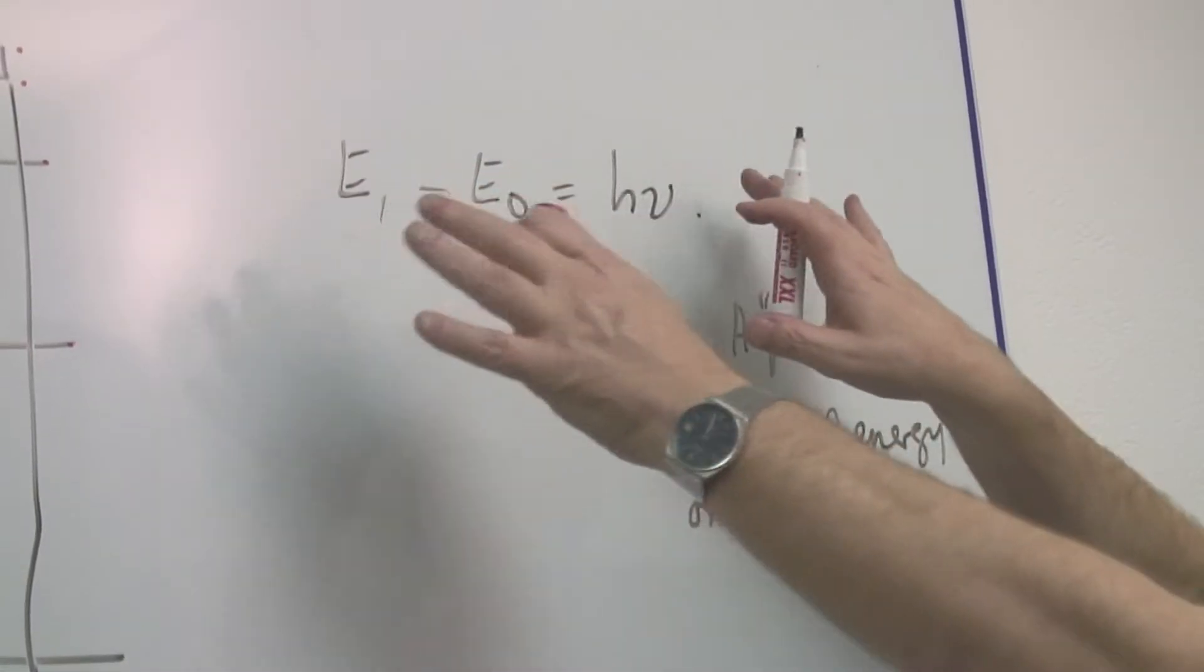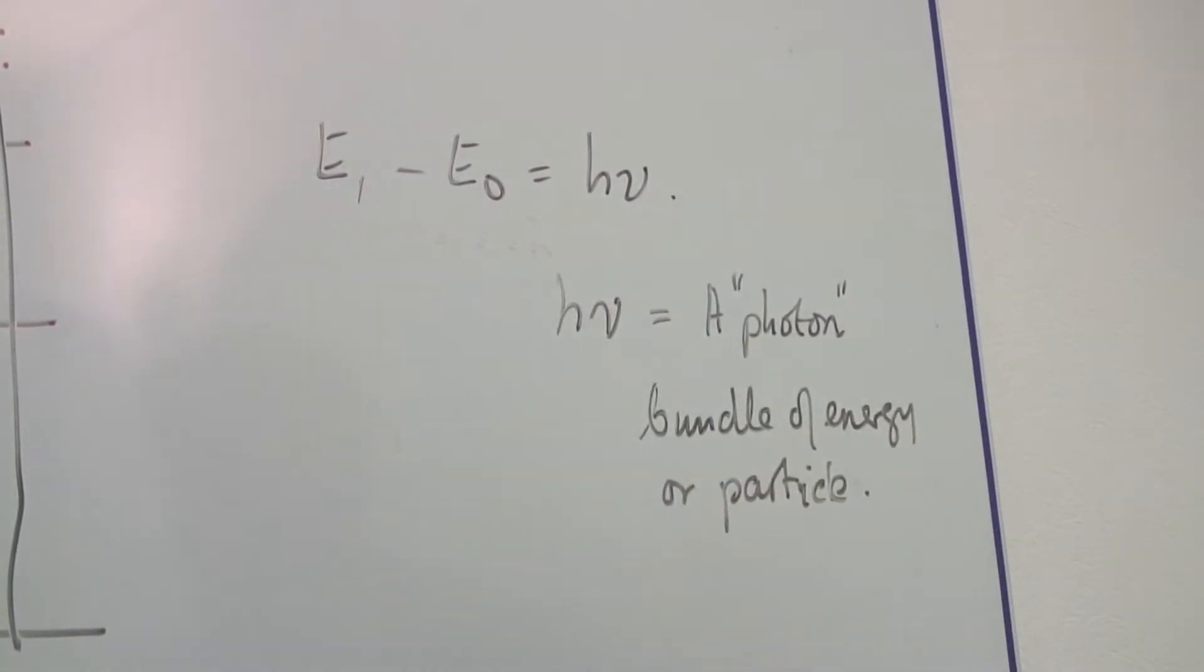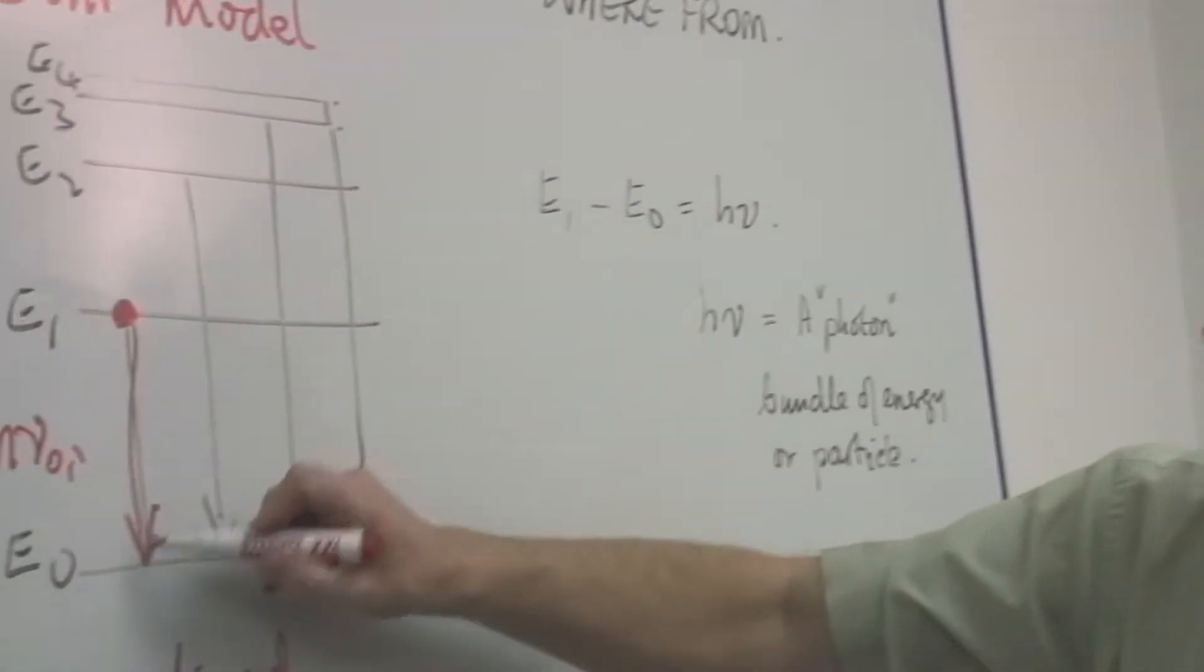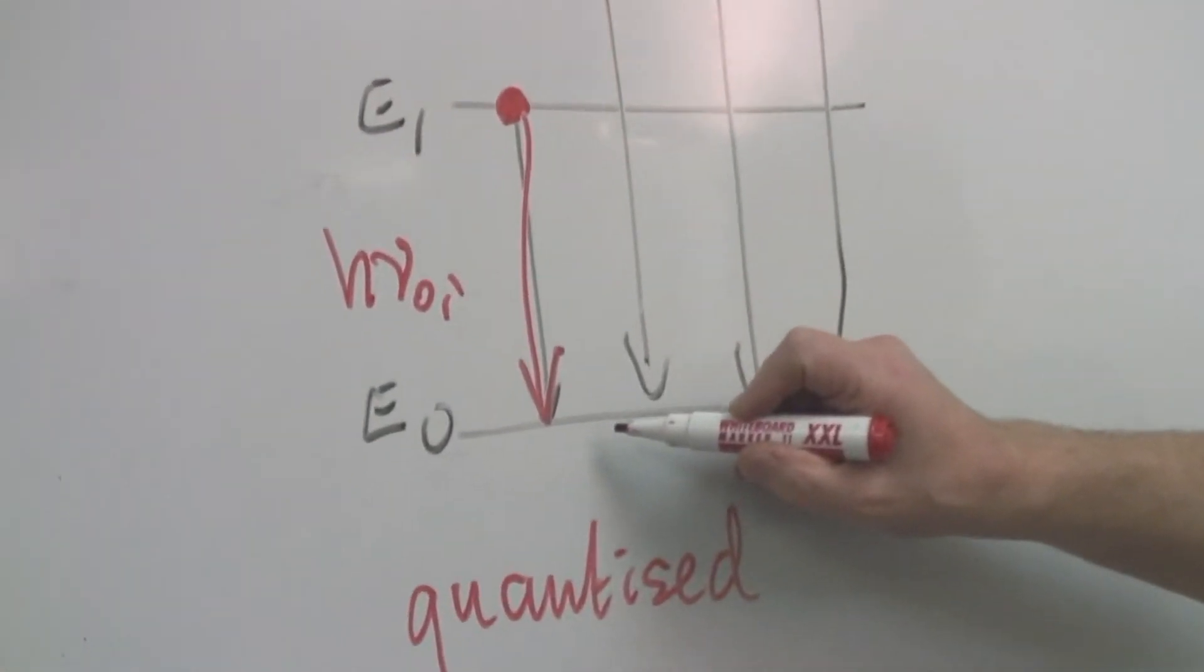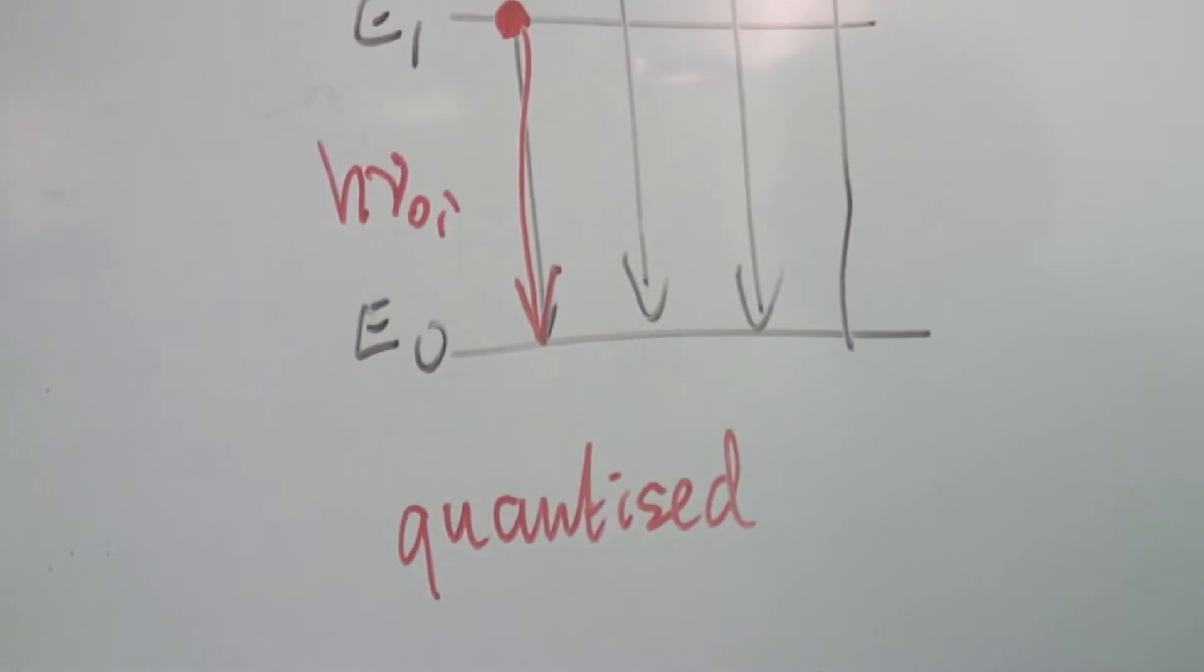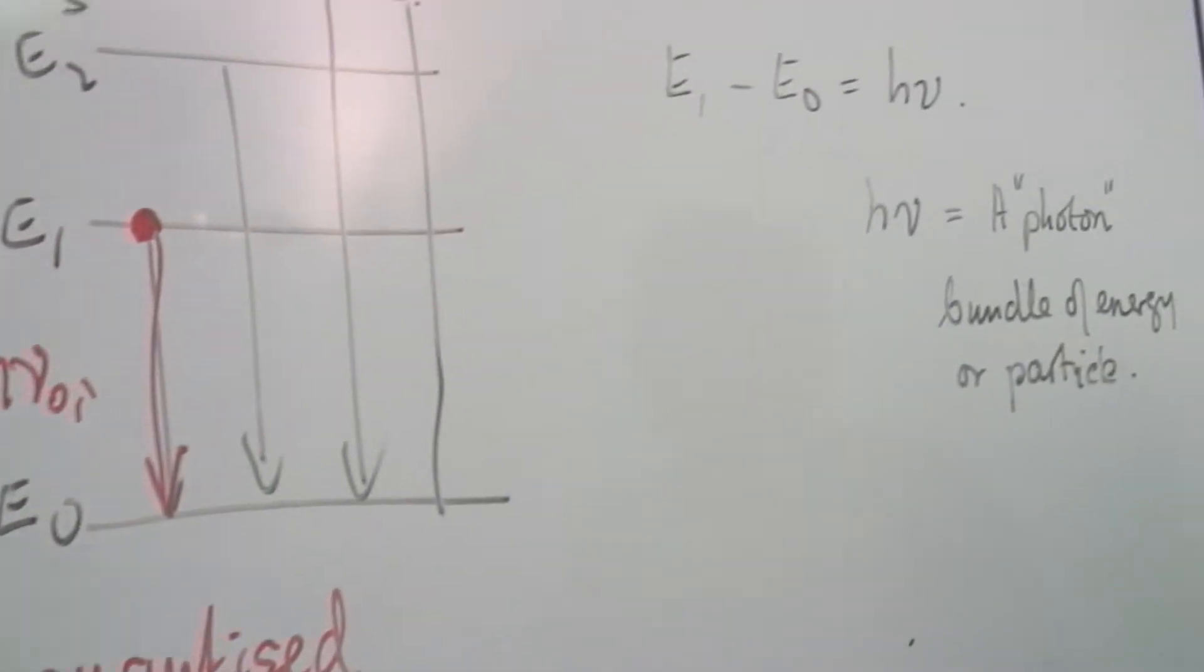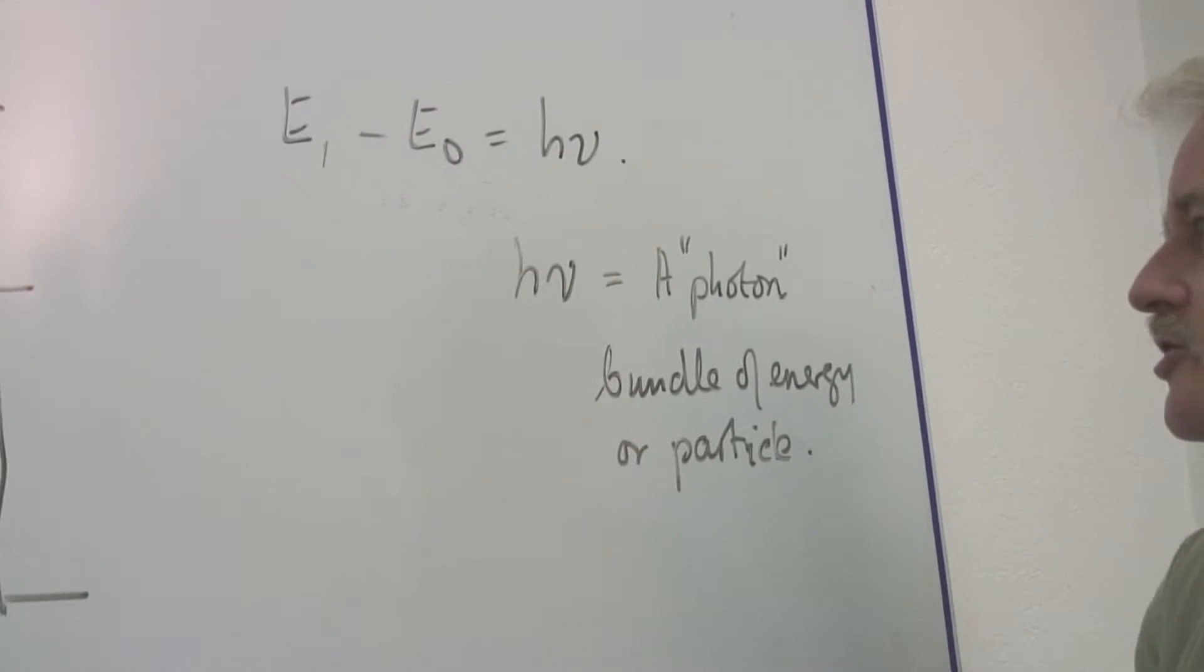Now it doesn't matter if you don't understand that too much, but just remember that it depends strictly on that energy difference. So it's only certain energies you can get. And this H nu is a photon, a little packet of energy.